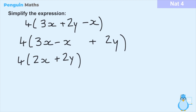Now we get rid of the brackets by multiplying everything inside by 4. So we multiply 2x by 4 and 2y by 4. Two x times 4 is 4 lots of 2x, which is 4 times 2 giving us 8x. And for y: 4 multiplied by 2y is 4 times 2, which gives us 8y. So the simplified expression is 8x plus 8y.